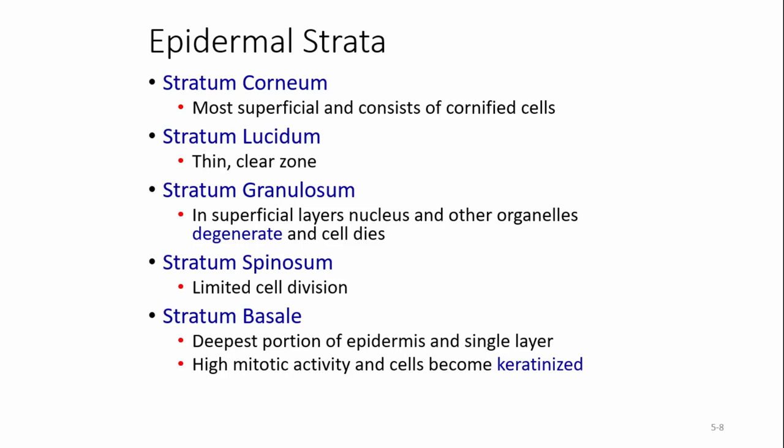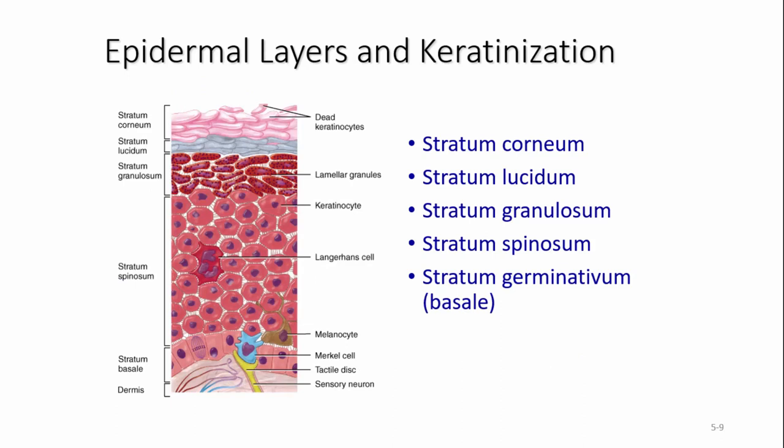Because stratum basale is just that one single layer, as cells divide and get shoved up a little bit, they're in the stratum spinosum. There's limited cell division there. Eventually cells start to die off — that's the stratum granulosum. As they get compressed, like on the bottom of your feet or palms, it produces the stratum lucidum, and then they begin to flake apart as the stratum corneum.